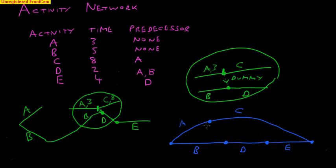But also, activity A is also required for activity D. So let's put that dummy path in there. Let's put in some arrows. And sometimes, A takes 3, B takes 5, C takes 8, D takes 2, E takes 4.